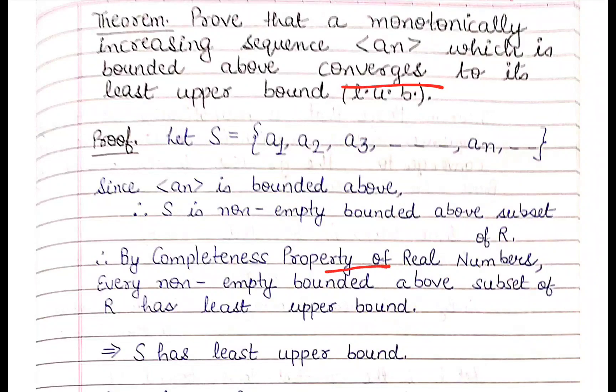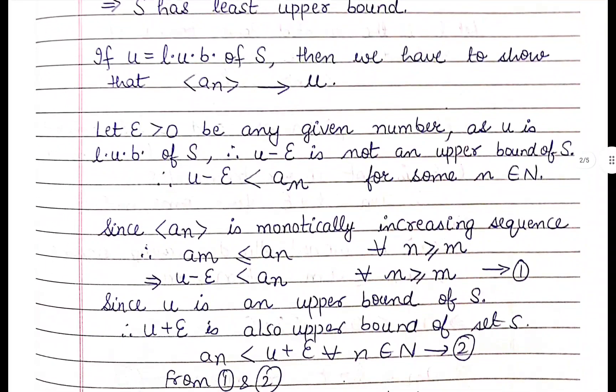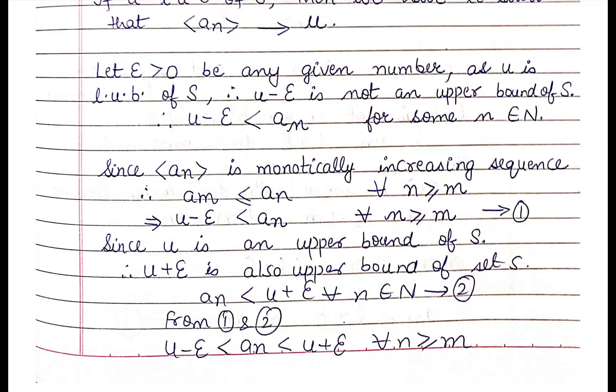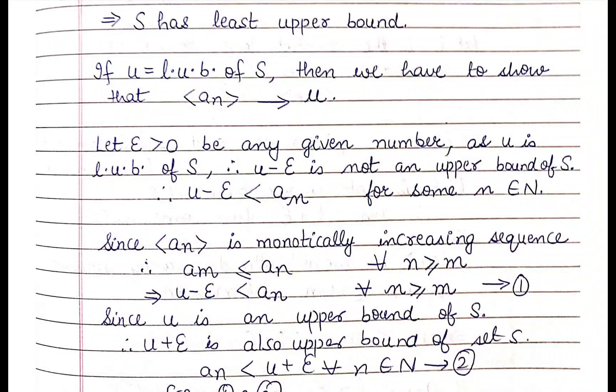By the completeness property of real numbers, the least upper bound — supremum — exists. We call this supremum U. We need to show that this sequence converges to U, the least upper bound. Since the sequence is bounded above and monotonically increasing, it will converge to its supremum U.